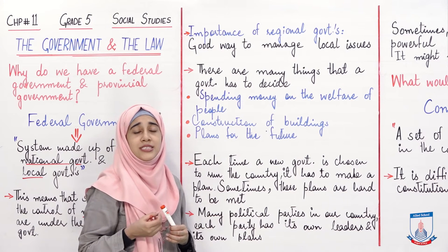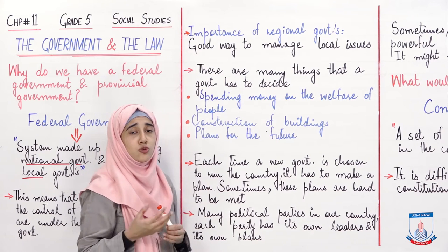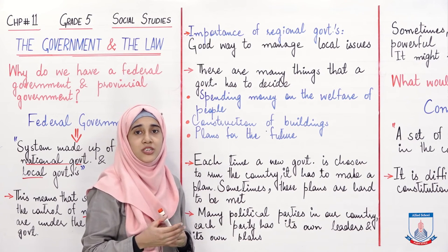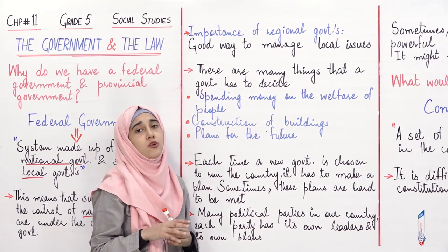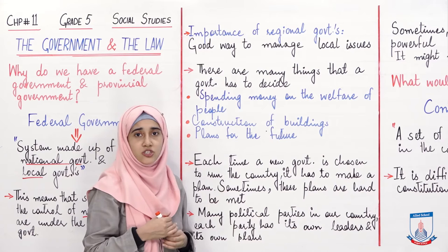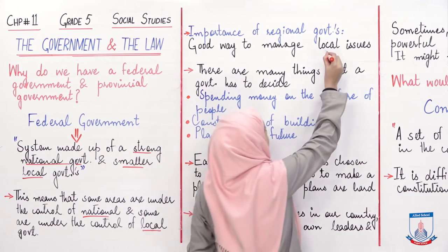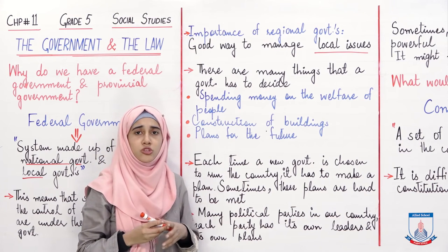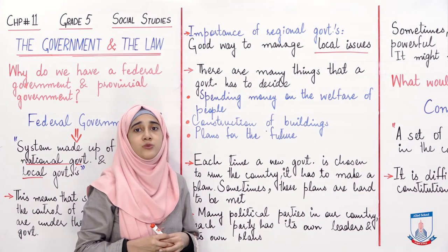Kyunki agar kisi ek region mein kisi ek bande ko, ya kisi party ko, ya kisi society ko masala hai, toh woh direct national government ko approach nahin kar sakti. Is liye behtar hai ke har region ki ek alag government ho, taaki woh us regional government ko approach kare. Agar toh masala waheen hal ho sakta hai toh theek hai, warna phir us masale ko aage le ja kar national government tak pohanchaya jata hai. So regional governments banana is a good way to manage local issues.